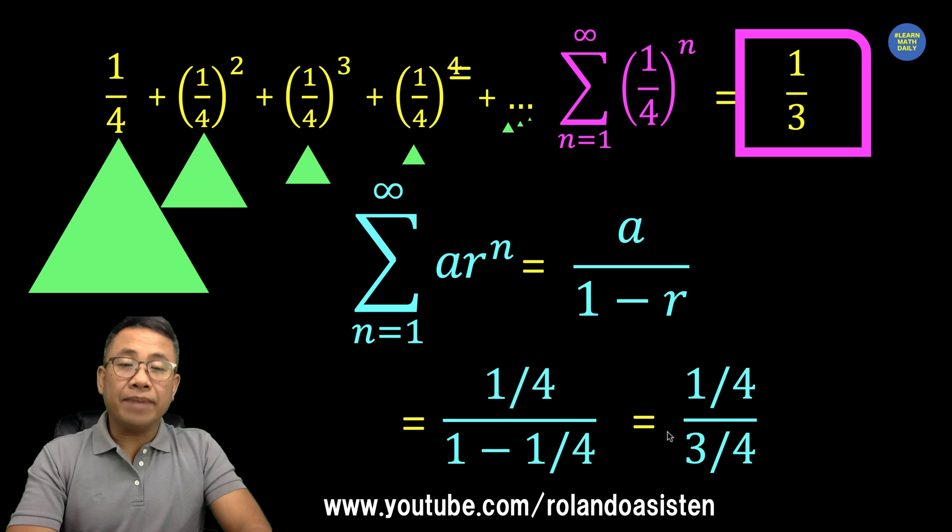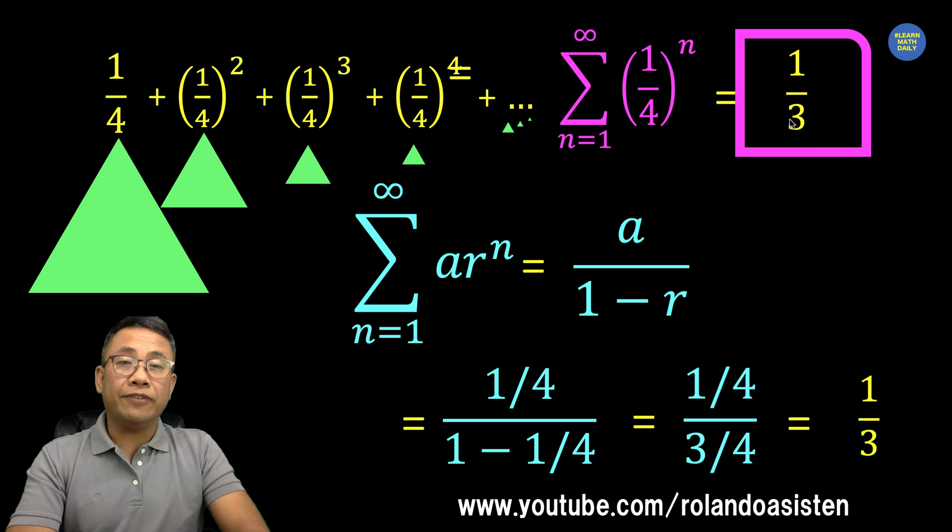And computing this value, we arrive at 1/4 over 1 minus 1/4 which is 3/4, and that is equal to 1/3 which is the same as what we found out in our visualization.